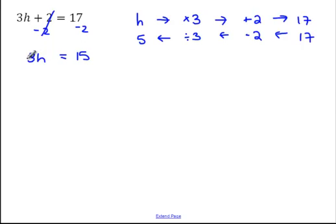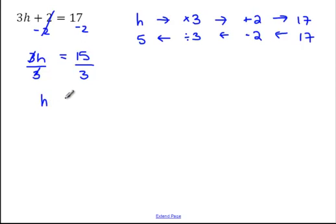So now I've got a new equation: 3h is equal to 15. The opposite of multiplying by 3 is dividing by 3, so divide both sides by 3. 3 divided by 3 just leaves us with 1h, so h is equal to 15 divided by 3, which is 5. And the good news is that's the same thing we got with our flowchart.